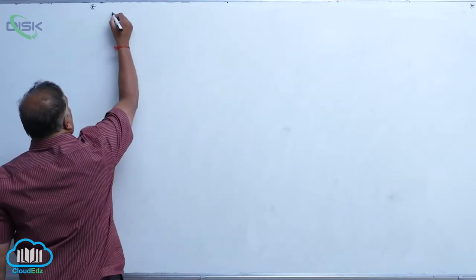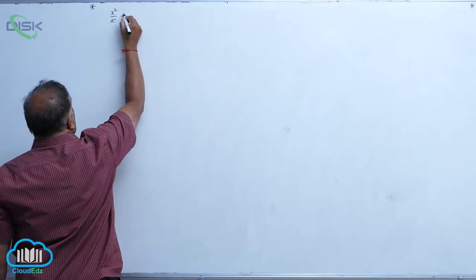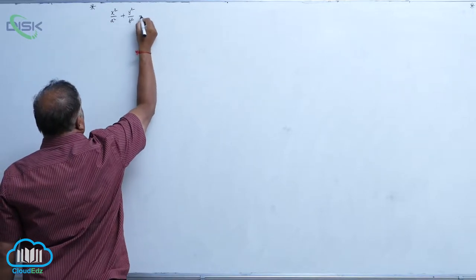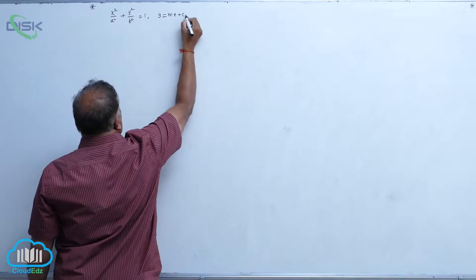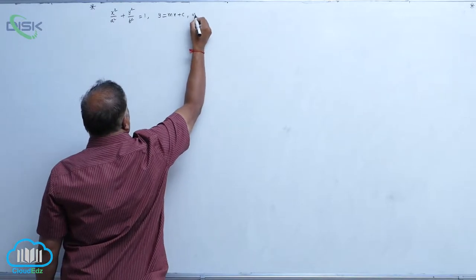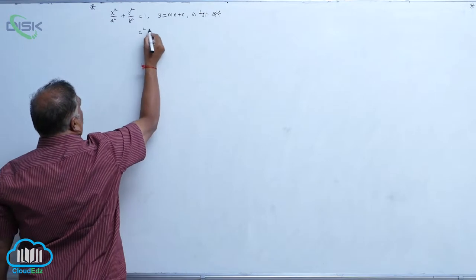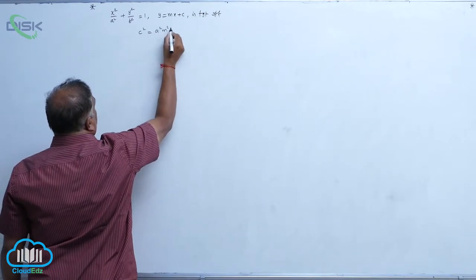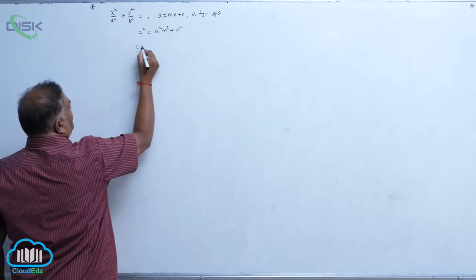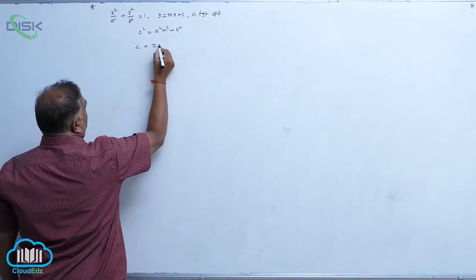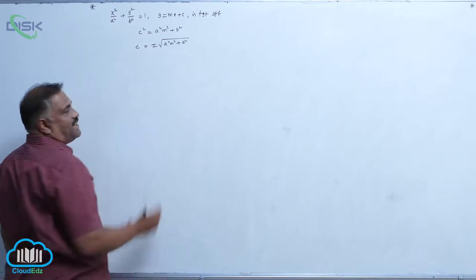Already we know that for standard ellipse x²/a² + y²/b² = 1, y = mx + c is a tangent if and only if c² = a²m² + b². Now observe that c can be written as ±√(a²m² + b²).